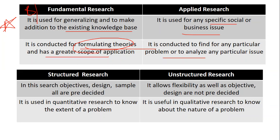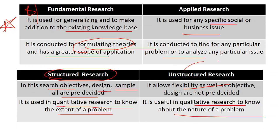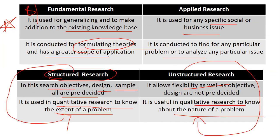Then we have structured research, where objectives, designs, and samples are pre-decided and pre-planned. In unstructured research, there is flexibility and no such pre-decision is taken. Structured research is quantitative in nature — used to know the extent of a problem — while unstructured research is qualitative in nature — used to know the nature of problems. These points about qualitative and quantitative research can also be applied vice versa.